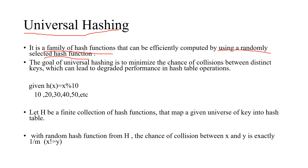Separate chaining wastes space — they have space but are not fully utilizing it. That was the problem with all these collision resolution techniques. So what universal hashing is saying is that it is better to not use a single hash function.